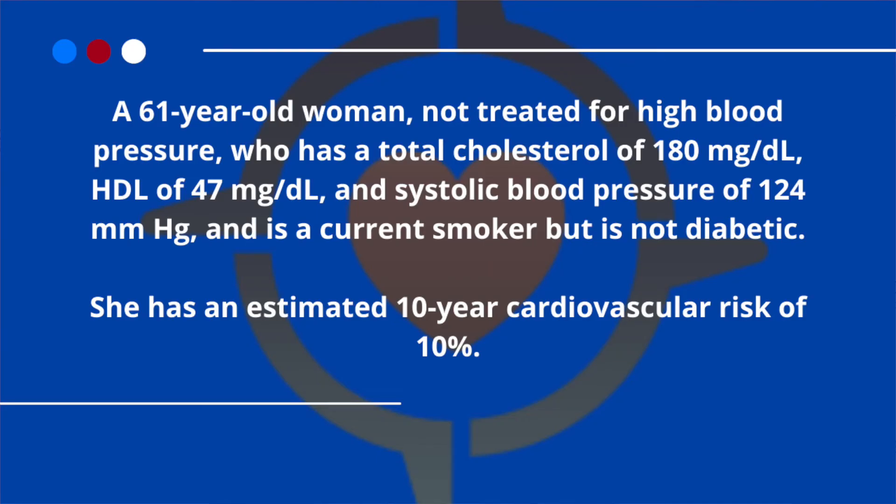Let's take some examples. We have a 61-year-old woman not treated for high blood pressure who has a total cholesterol of 180, HDL of 47, and systolic blood pressure of 124, and is a current smoker but is not diabetic. She has an estimated 10-year CVD risk of 15.6%.